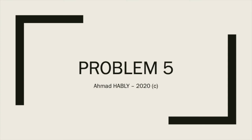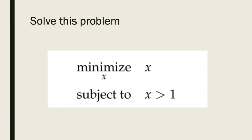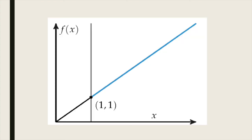For problem 5, it was a tricky problem: what is the minimum of X subject to X strictly greater than 1? In fact, there is no solution because the constraint is infeasible. If it is greater or equal, we can find a solution.